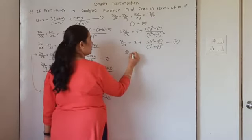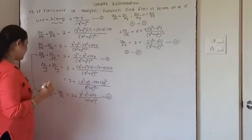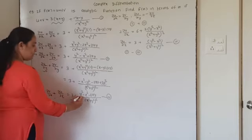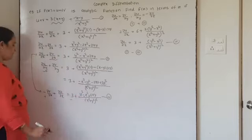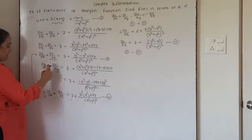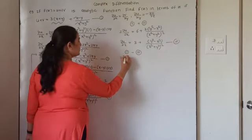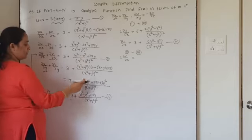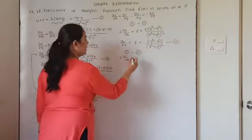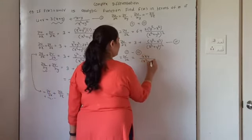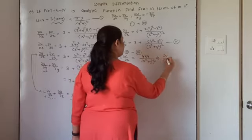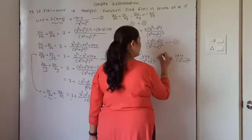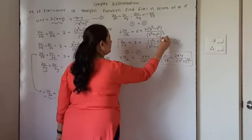Instead of addition, if I take the subtraction, say equation 2 minus equation 3. The sign will get reversed: this minus will become plus, plus will become minus, plus 3 will become minus 3. This minus y squared plus x squared plus 2xy. So the plus ∂u/∂x and minus ∂u/∂x will get cancelled. We have 2 times ∂v/∂x equal to plus 3 minus 3, which cancels, plus y squared minus y squared minus x squared plus 2xy plus 2xy, giving 4xy upon (x squared plus y squared) squared. So ∂v/∂x equals 2xy upon (x squared plus y squared) squared. We now have values of ∂v/∂x and ∂u/∂x.